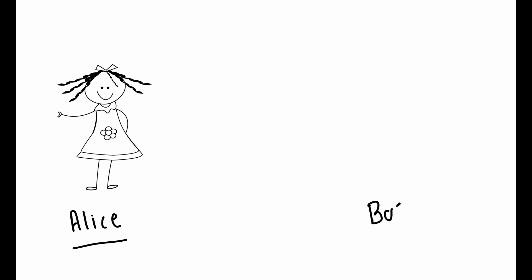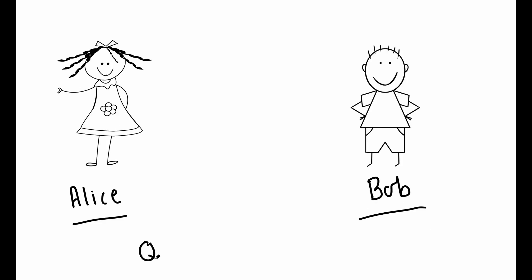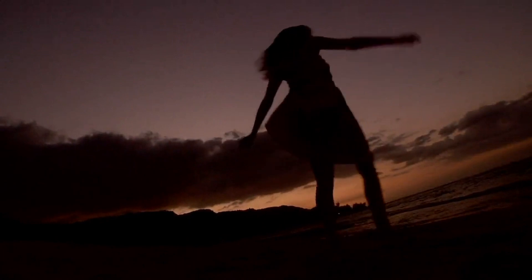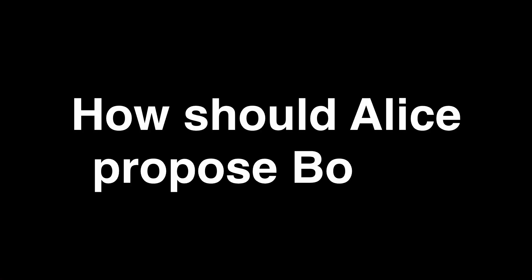Alice and Bob are two quantum physicists. They are working on quantum information and quantum computing. Alice is impressed by Bob's intelligence and has fallen in love with him. She thinks about him day and night and wants to tell him her feelings. So how should Alice propose to Bob?